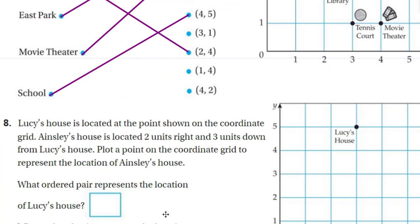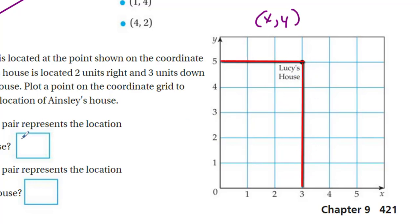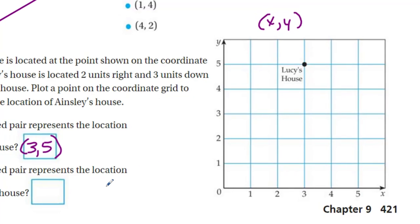Now it says Lucy's house is located at the point shown on the coordinate grid. Ainsley's house is located two units right and three units down from Lucy's house. Plot a point to represent the location of Ainsley's house. First: what ordered pair represents the location of Lucy's house? Again, we're looking at our x, y — that's our ordered pair, x must come first. Here we have three, and then here we have five. The three for x must come first. Be very careful not to switch it by going too fast, especially on an exam.